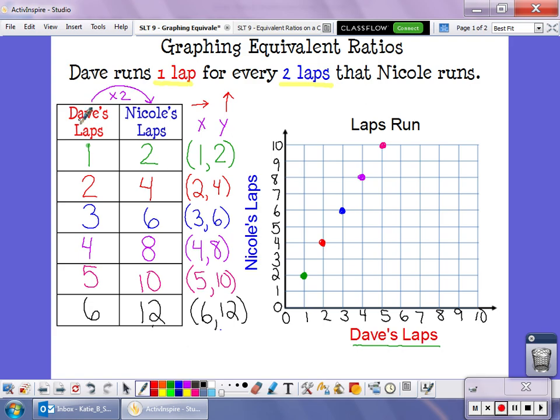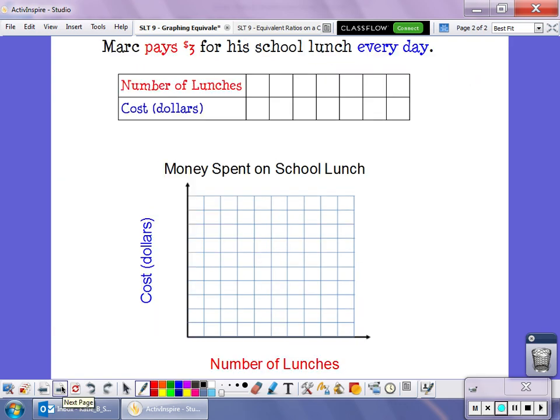Remember your first value is Dave's laps, which is our x value. Our y value is Nicole's laps. And we just put them together to create an ordered pair.